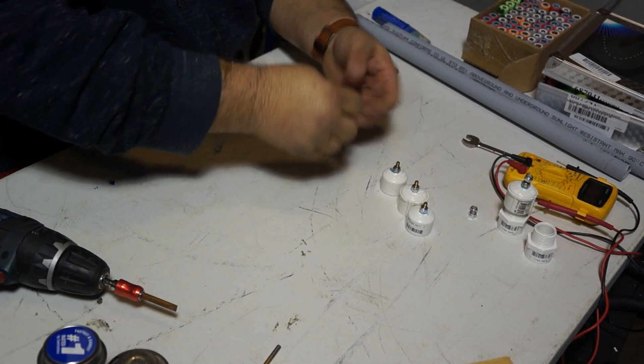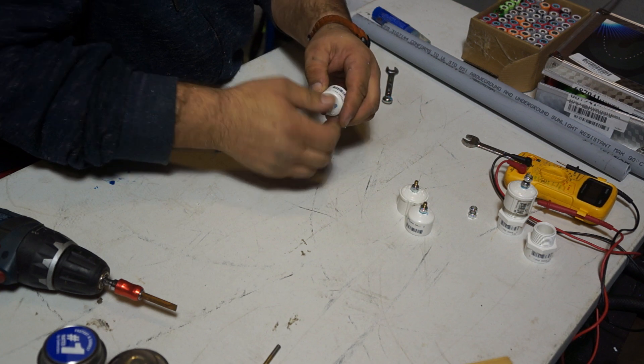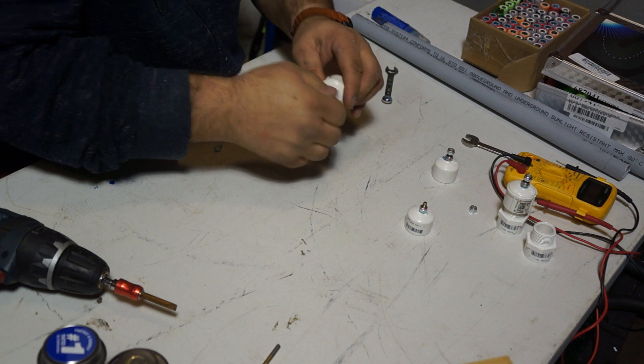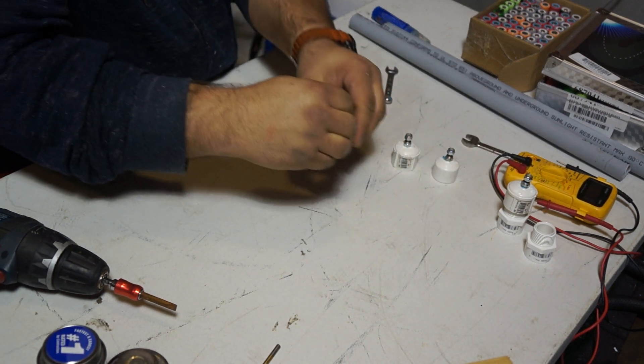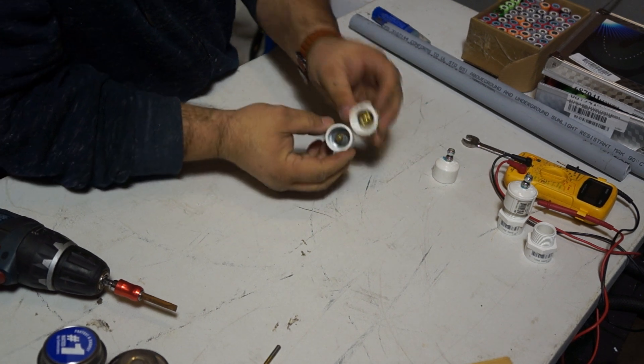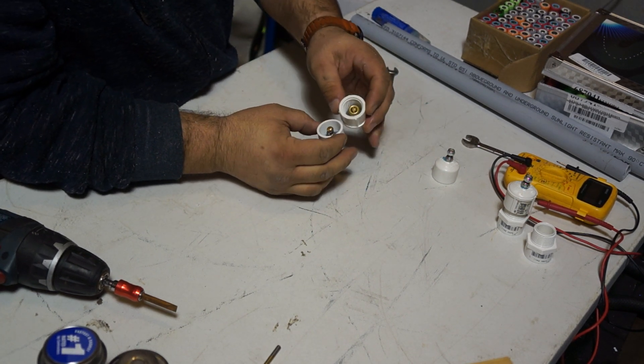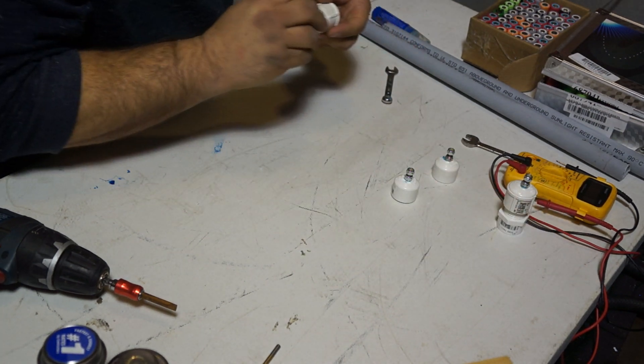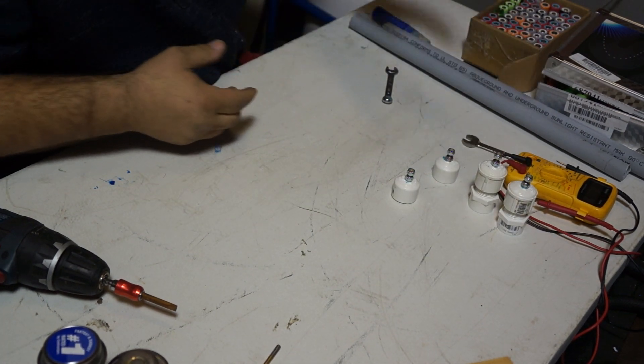Then we have these second nuts that will go on for clamping the electrical connectors into ends. Now as you can see, we have these ends and those ends will attach themselves or connect to the batteries that are spring-loaded.